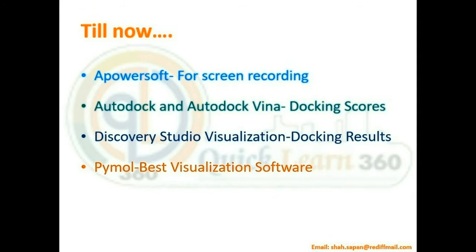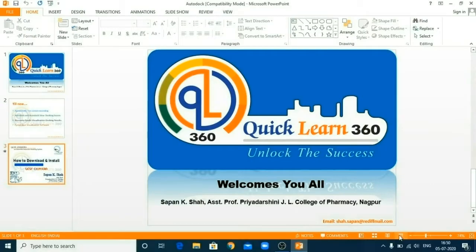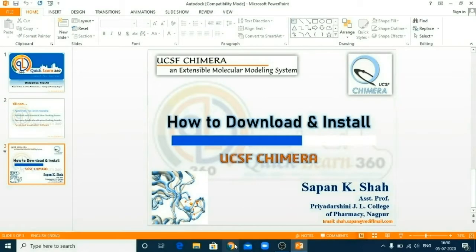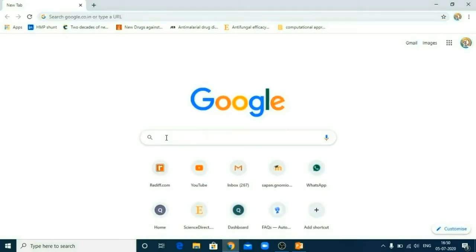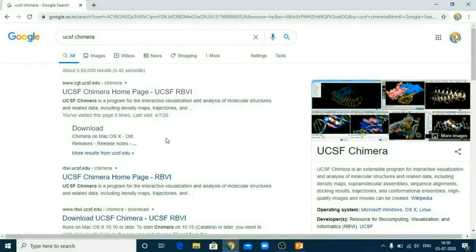So let's move on for today's session: how to download and install UCSF Chimera. This UCSF Chimera is an extensive molecular modeling system. So let's move on and check how to download and install UCSF Chimera. For that, first of all, go to your web browser. In Google, just type UCSF Chimera and open the website. The first link is for the UCSF Chimera official website.